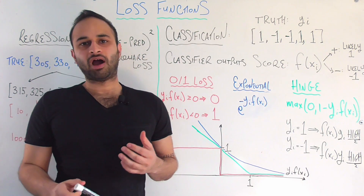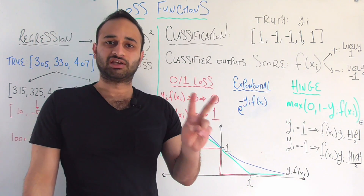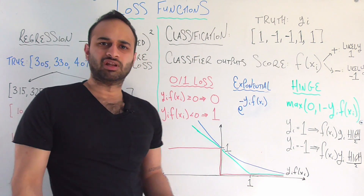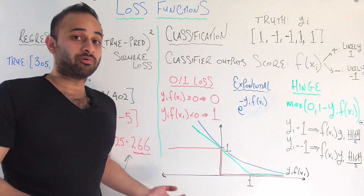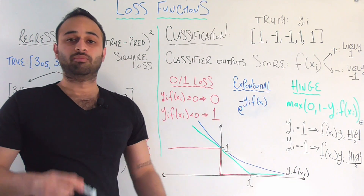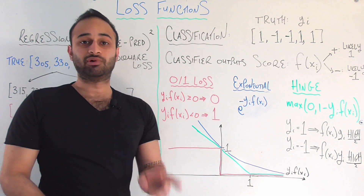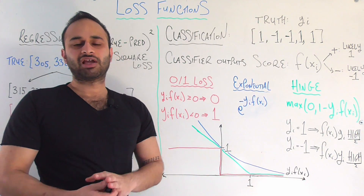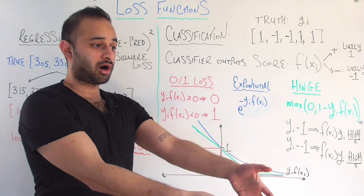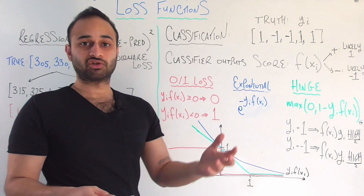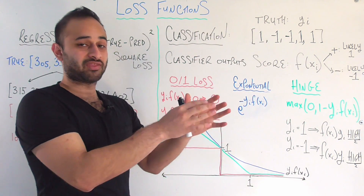Now let's think about why the 0-1 loss might not be great. Suppose we have two training examples: one where the quantity is just slightly below 0 — almost correctly classified — and another where the value is way out in the negative region. The second one is a much bigger problem, so we want to give it a bigger loss. But the 0-1 loss assigns a loss of 1 to both because it's just a step function. We'd like some notion that the more negative the score is, the bigger the problem, and therefore the bigger the penalty — so that example can be prioritized in the next iteration of the algorithm.